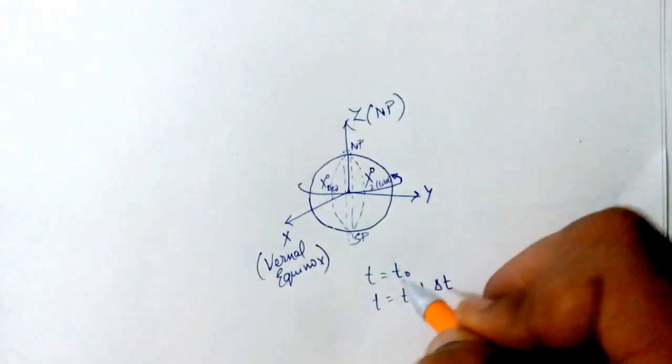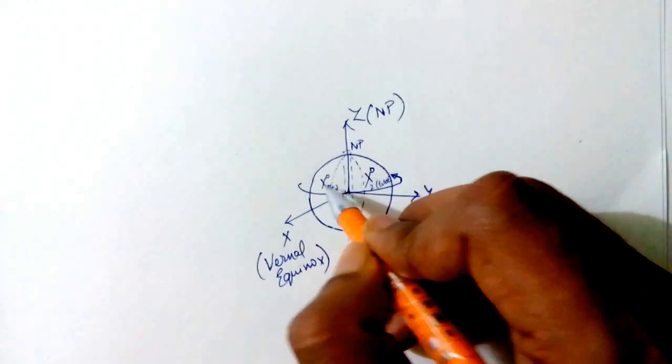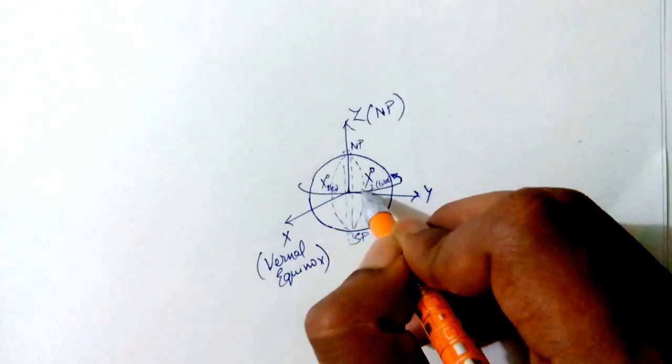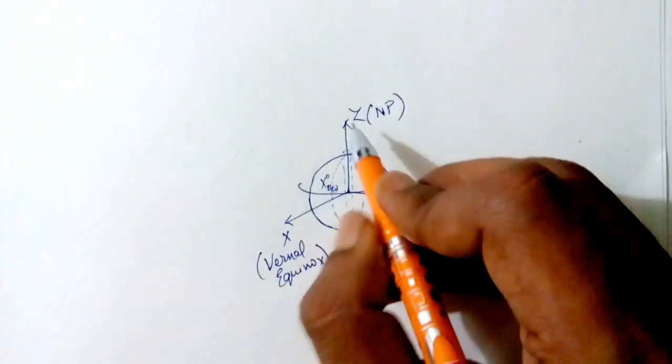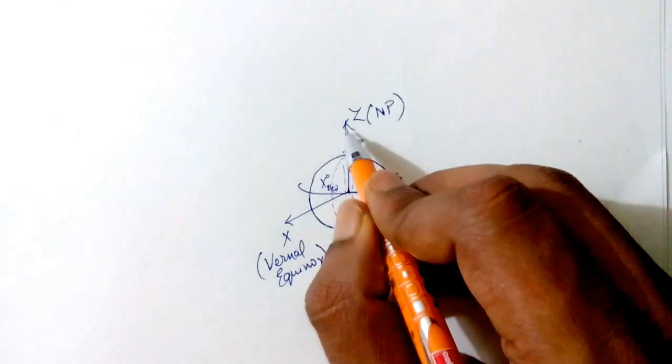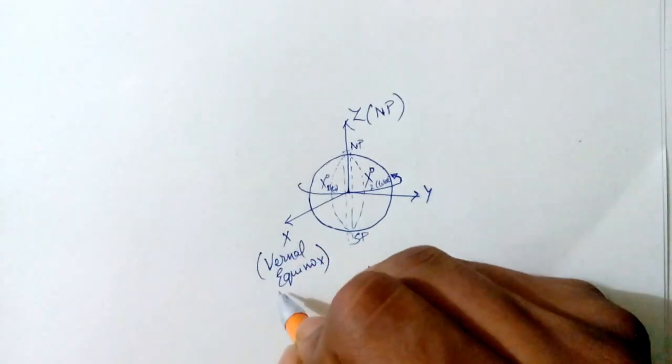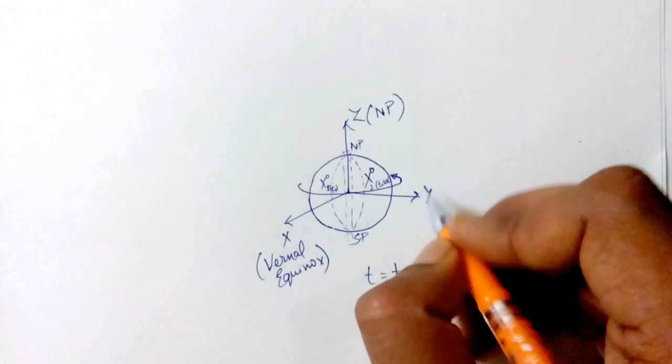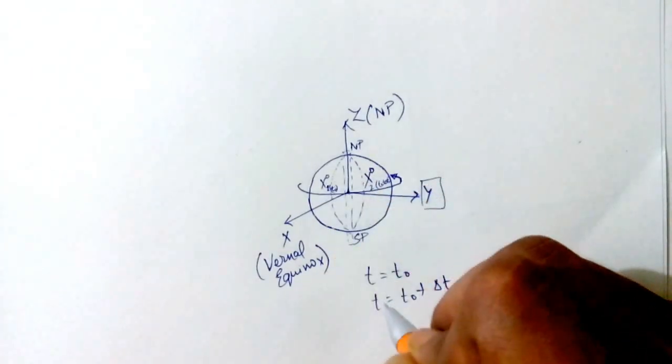So at time equals t0, the x degree longitude will be over here. At time equals t0 plus delta t, the x degree longitude will come somewhere over here because of the Earth's spin. But the x, y, and z axes will still be pointing towards the same point. x will always be pointing towards the vernal equinox, z will always be pointing towards the North Pole, and y will be making the right-hand coordinate system.